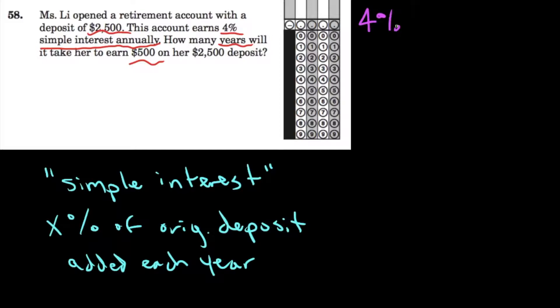Now, we have to ask, what is 4% of Miss Lee's original deposit of $2,500? That's what's going to be added to her account at the end of each year.